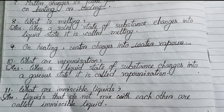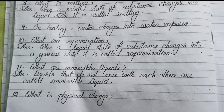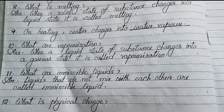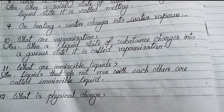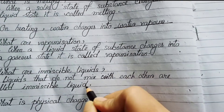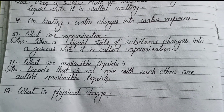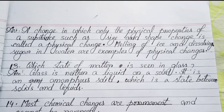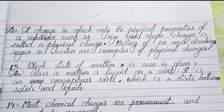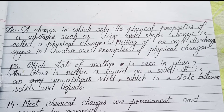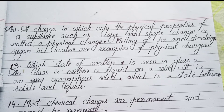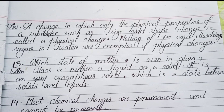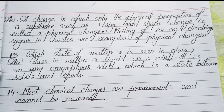Number 11: What are immiscible liquids? Liquids that do not mix with each other are called immiscible liquids. Number 12: What is a physical change? A change in which only the physical properties of a substance — such as size and shape — change is called a physical change. Melting of ice and dissolving sugar in water are examples of physical changes.